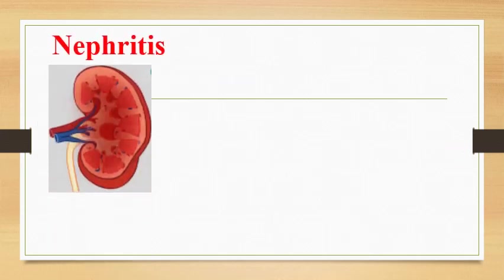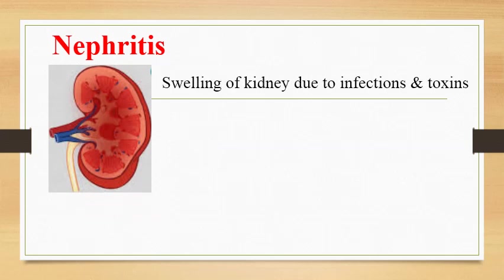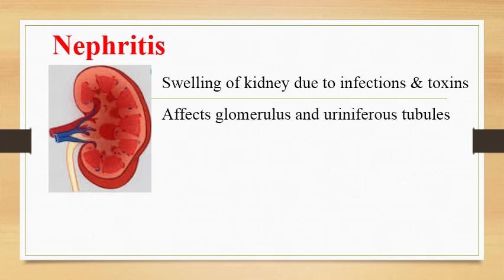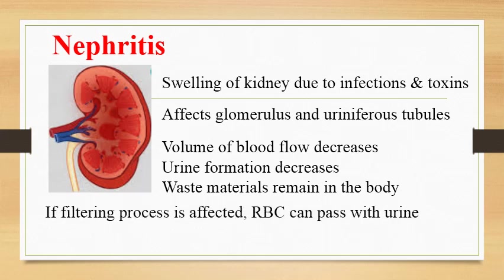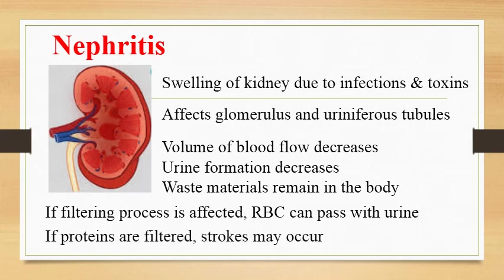Nephritis: Swelling of the kidney due to infections and toxins is called nephritis. It affects the glomerulus and uriniferous tubules. As a result of nephritis, the volume of blood flow decreases, so urine formation also decreases and waste materials remain in the body. If filtering is affected by nephritis, red blood cells may pass with the urine, and if proteins are also filtered, strokes may occur.